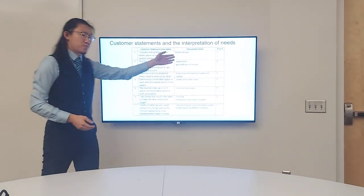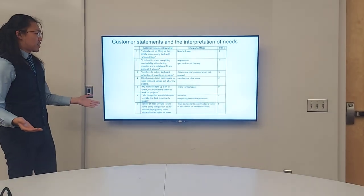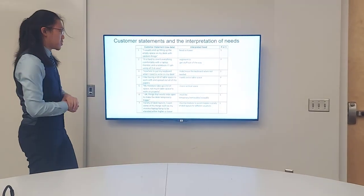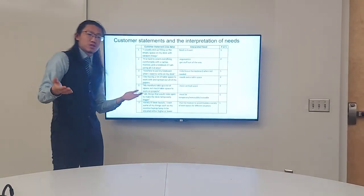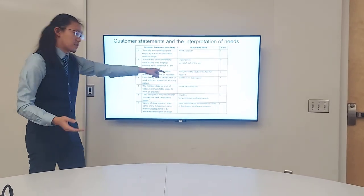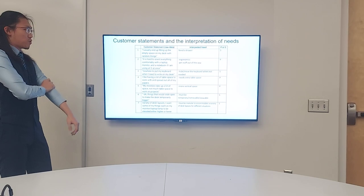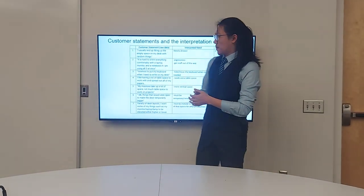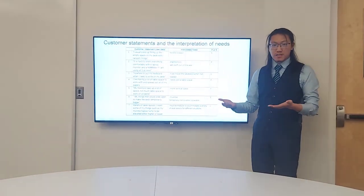We interpreted their needs and set them as primary or secondary. As you may notice, all the primary needs involve extra space. For example, getting stuff out of the way, which equals having more space on the table, getting extra table space, or having more vertical space. As for the secondary needs, they're all some sort of functionality that may not connect to having more workspace on the desk.